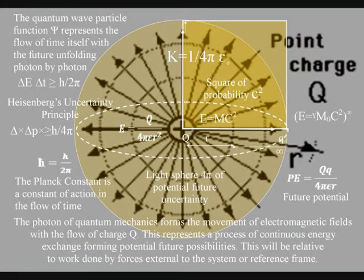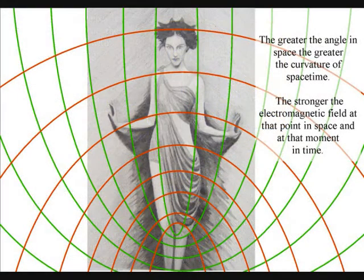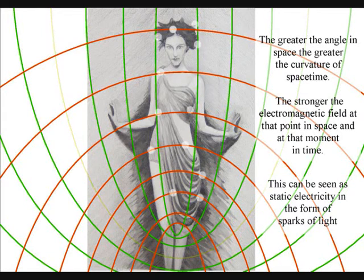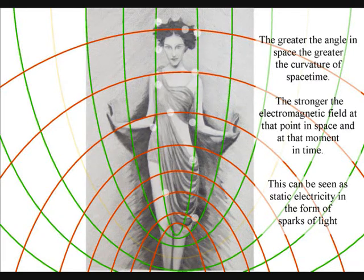The photon of quantum mechanics is the carrier of the electromagnetic force and therefore forms the movement of electromagnetic fields with the flow of charge. The atoms react with the electromagnetic light waves, forming new photon oscillations, distorting the geometry of space-time, creating time variations between and within objects.